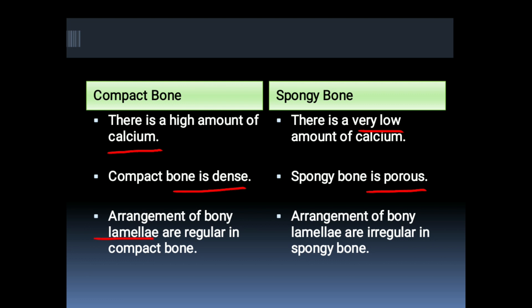The arrangement of bony lamellae is regular in compact bone, while the arrangement of bony lamellae is irregular in spongy bone.